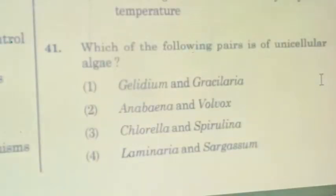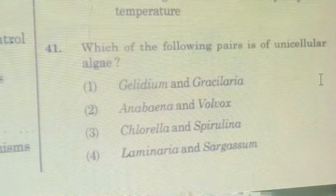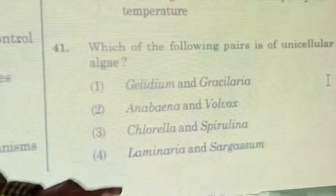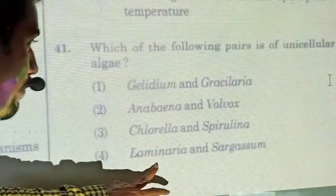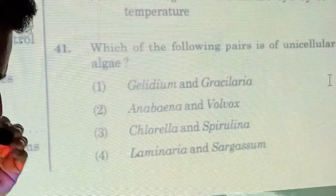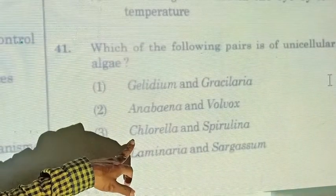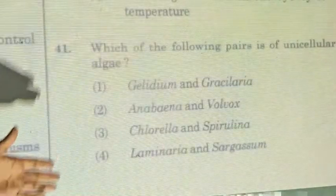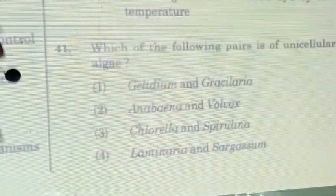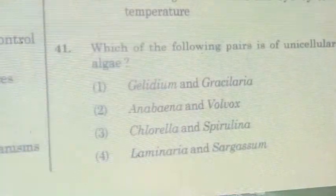Question forty-one: which of the following are unicellular algae? Geranium, Glacilaria, Porphyra, Laminaria, and Sargassum are all multicellular. Volvox is colonial. The unicellular algae from the options are Chlorella (green algae, Chlorophyceae) and Spirulina (blue-green algae — used as food for space travelers and astronauts). The answer for question forty-one includes Chlorella and Spirulina.